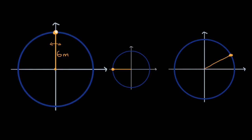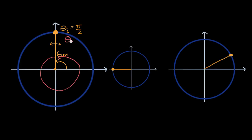Our initial angle, theta initial, is measured relative to the positive x-axis. Our theta initial is pi over two. And let's say we were to then rotate it by positive two pi radians, so we would rotate in the counterclockwise direction by two pi, and then the ball would end up where it started. So theta final would be pi over two plus two pi, which is five pi over two.